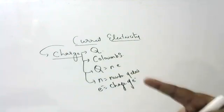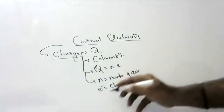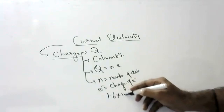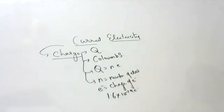The charge of an electron is constant. You have to remember its value: 1.6 into 10 to the power of minus 19 Coulombs. You have to remember it forever.